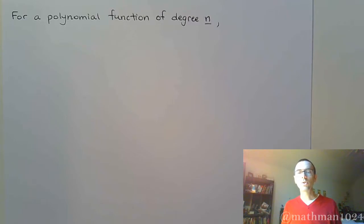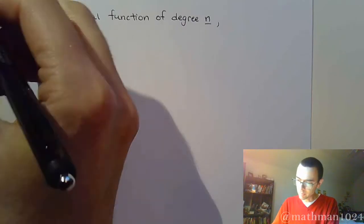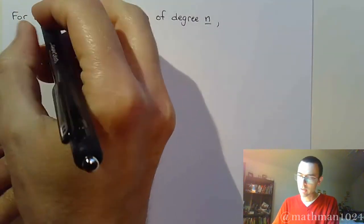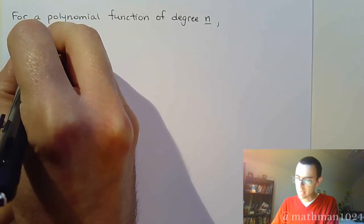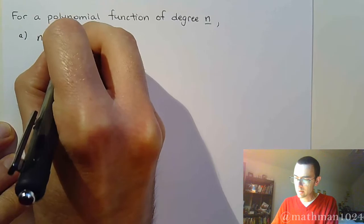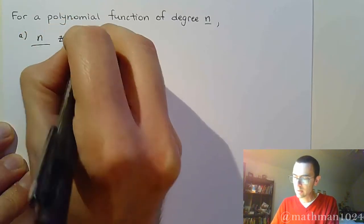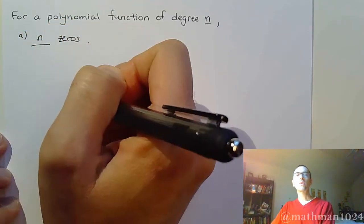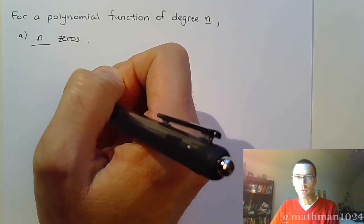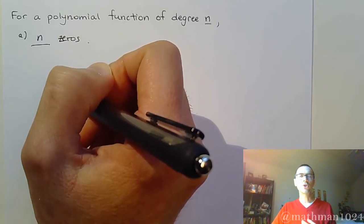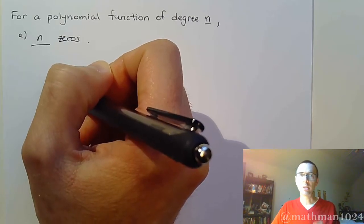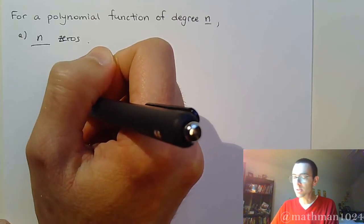So, in general, here's what we know about polynomial functions of degree n. They will have n zeros. So whatever the degree is, that's how many zeros we can expect to get. Now, we've mentioned in the past that sometimes zeros show up more than once - multiplicity. We're going to see what that means in terms of the graph here in just a moment.